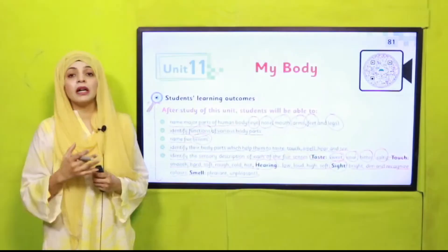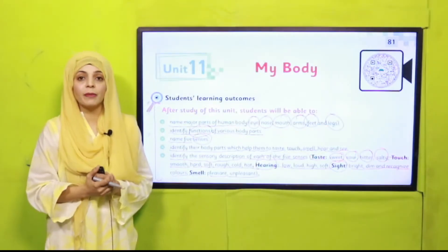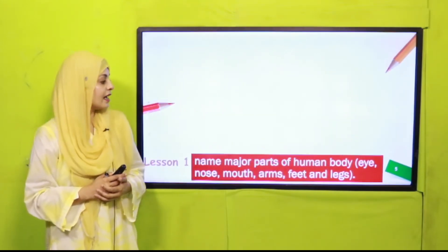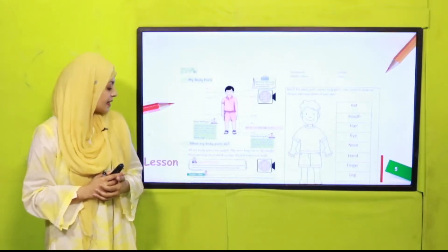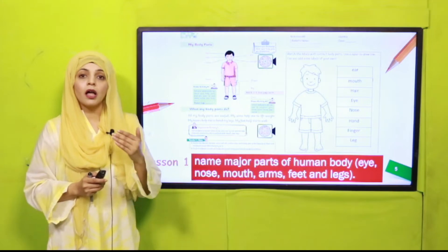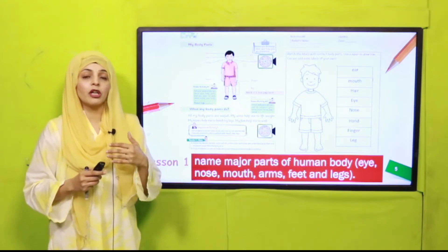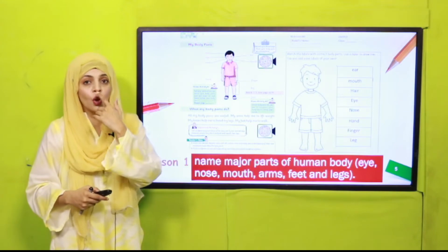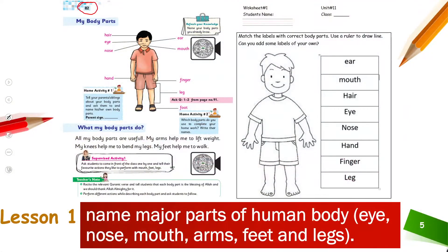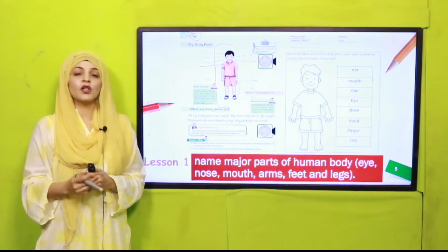In Unit Number 11 we will learn a lot of things. Lesson Number One covers body parts — your hands, legs, eyes, nose, mouth, and so on. The pages included are page number 82, where you can see a boy with his body parts labeled, and Worksheet Number One is also included in Lesson Number One.